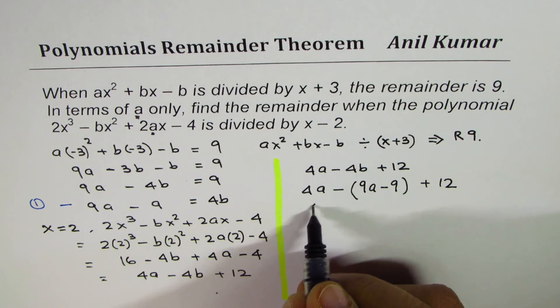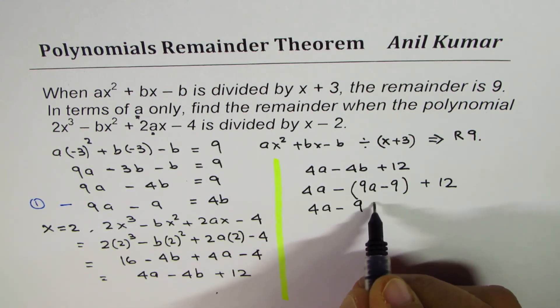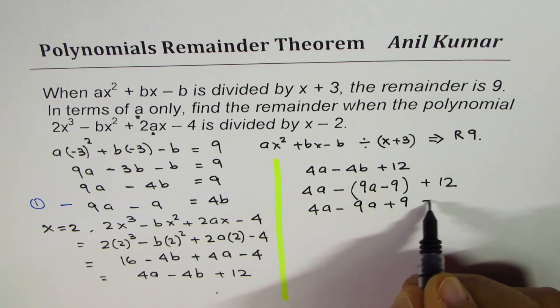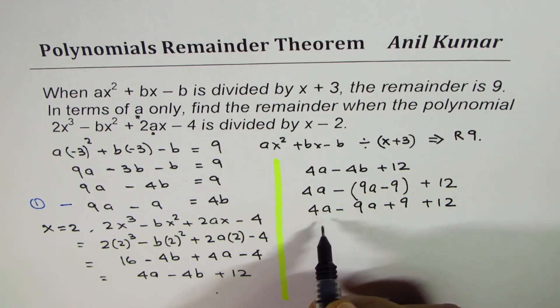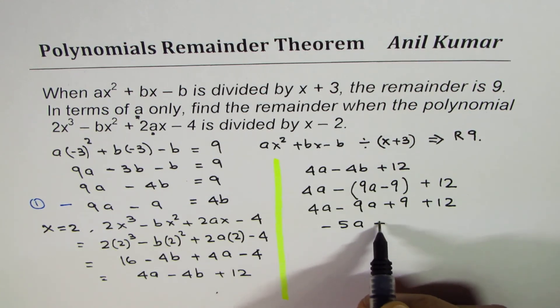Let's open this bracket. So we have 4a minus 9a plus 9 plus 12. And that gives us minus 5a plus 21.